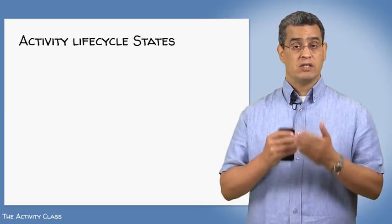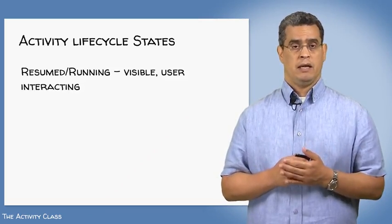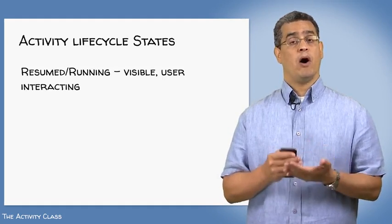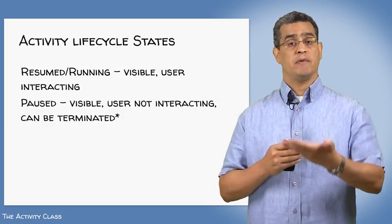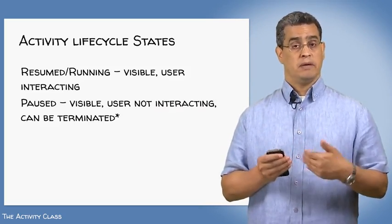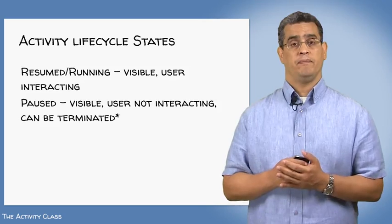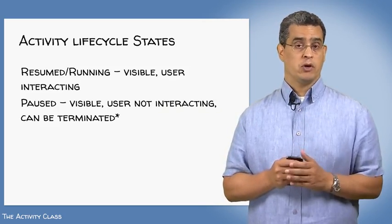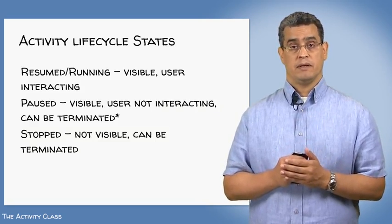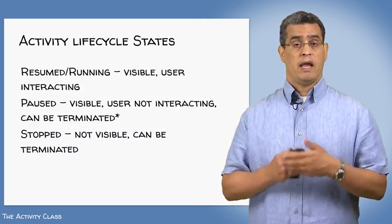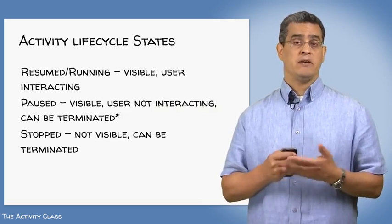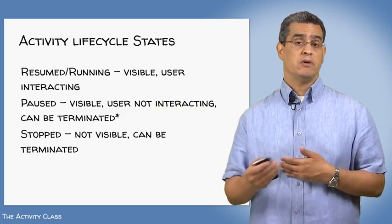Once an activity has started, it can be in a resumed or running state — the activity is visible and the user can interact with it. An activity can also be paused, for instance when a new activity starts to pop up in front of it. In this situation, the activity may still be partially visible, but the user can't interact with it. Prior to version 3.0, Android could terminate activities once they went into the paused state. Finally, the activity can be stopped — it is no longer visible, and Android is free to terminate stopped activities, knowing it might need to recreate them later if the user navigates back to them.